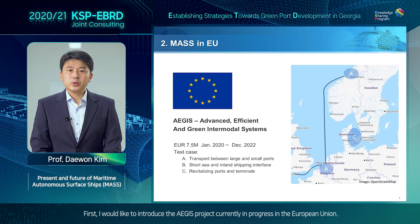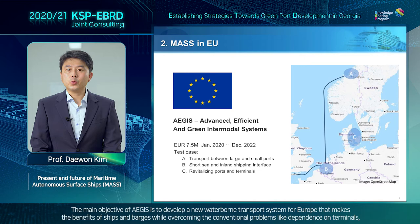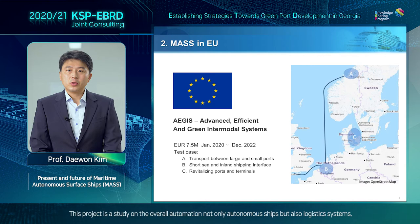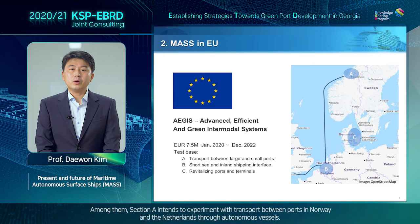First, I would like to introduce the AEGIS project currently in progress in the European Union. The main objective of AEGIS is to develop a new waterborne transport system for Europe that makes the benefits of ships and barges while overcoming conventional problems like dependence on terminals, high transit cost, low speed and frequency, and low automation in information processing. This project is a study on overall automation, not only autonomous ships, but also logistics systems.